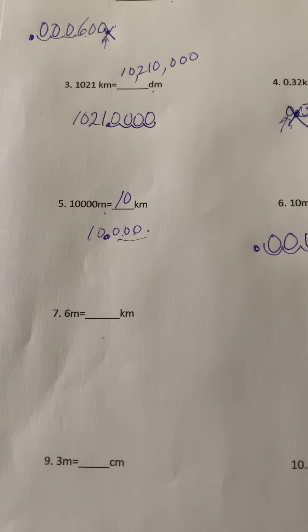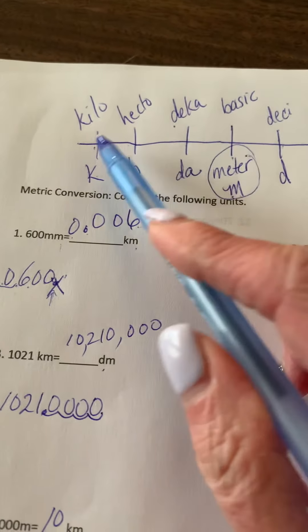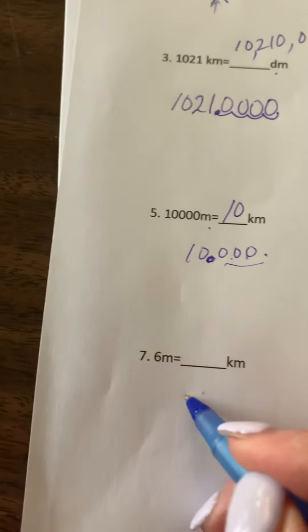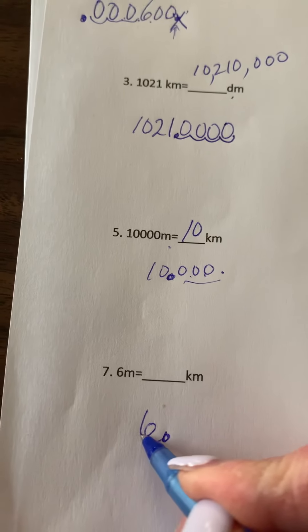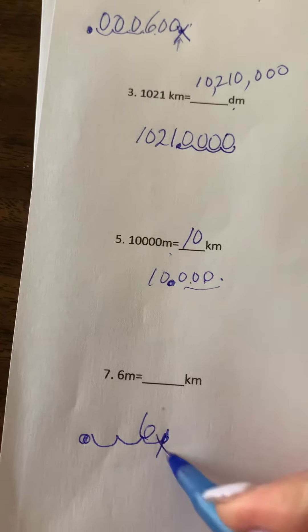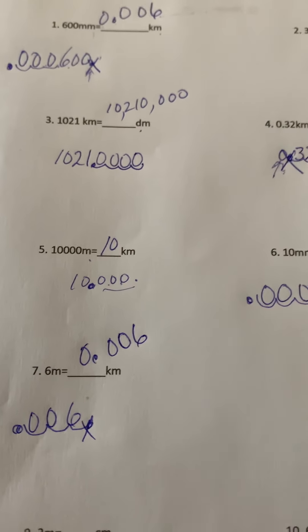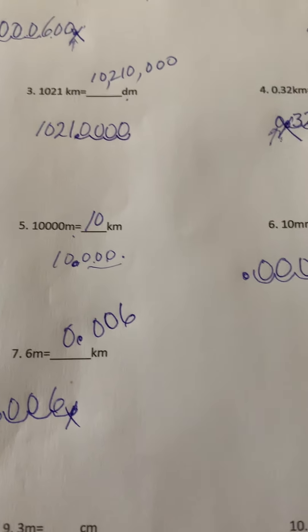Next one. Six meters to kilometers. So meters is a base unit. And we're going to move to kilometers: one, two, three to the left. Original decimal, one, two, three. Put the new decimal here. Scratch that one out. 0.006 kilometers, or zero and six one-thousandths of a kilometer.